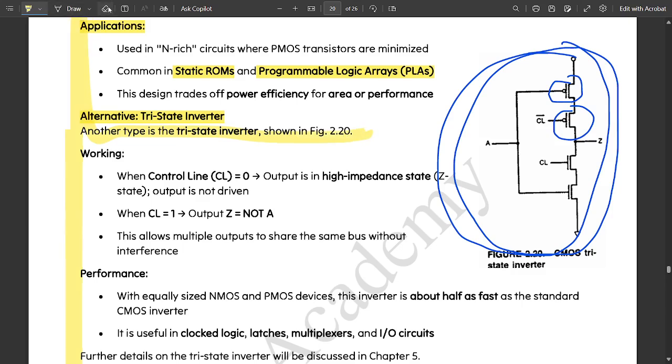Working: when control line or enable line is equal to zero, output is in high impedance state and output is not driven. When control line is equal to one, the output Z is not of A, that is it would be getting inverted. This allows multiple outputs to share the same bus without any interference.